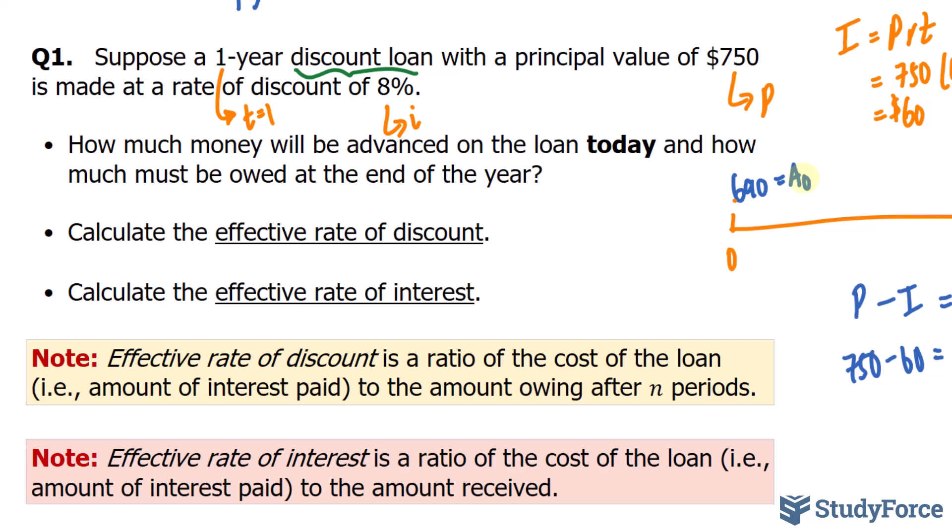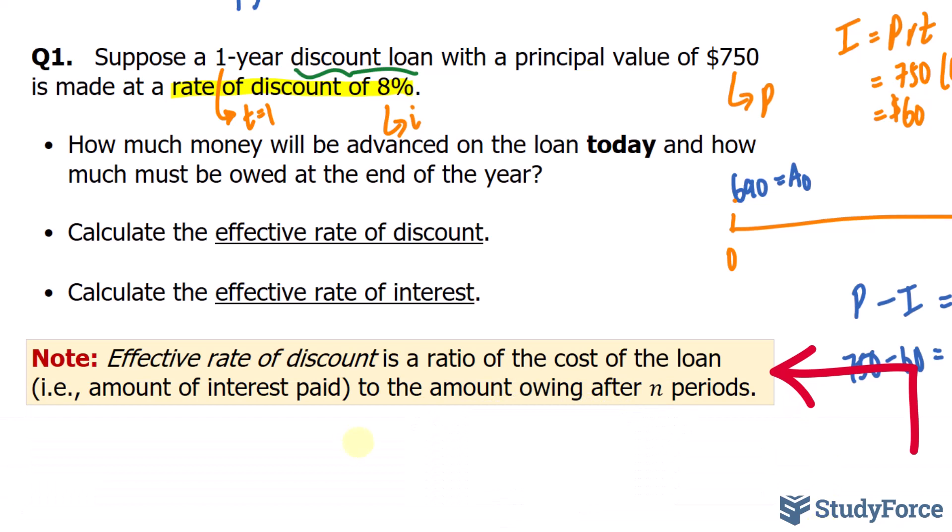The second part asks, calculate the effective rate of discount. Now, technically, we've already been told the rate of discount, so there's no calculation required here. But suppose in a case where you haven't been told the rate of discount, the idea is that the effective rate of discount is a ratio of the cost of the loan, which in our case is $60, divided by, since it's a comparison, to the amount owing after N periods. The amount owing after N periods is 750.